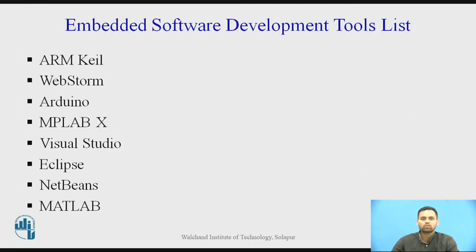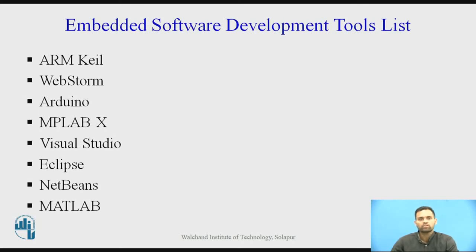These are some embedded software development tools — that is, the IDEs we are going to use while developing an embedded application. The first one is ARM Keil, next is WebStorm, then Arduino which is generally used in many educational systems, followed by MPLAB X, Visual Studio, Eclipse, NetBeans, and MATLAB. These IDEs include all the tools mentioned — emulator, linker, debugger, assembler — all included in a single package.